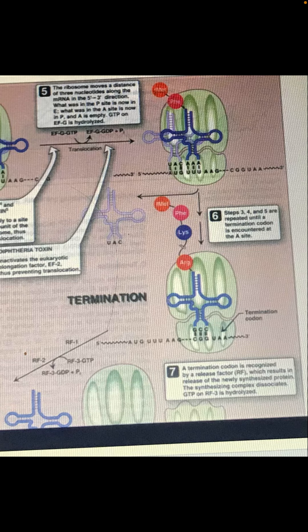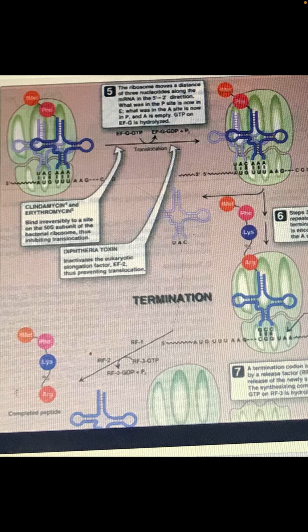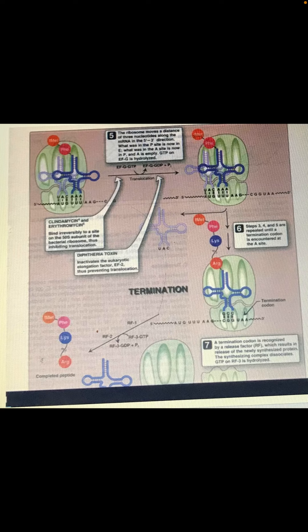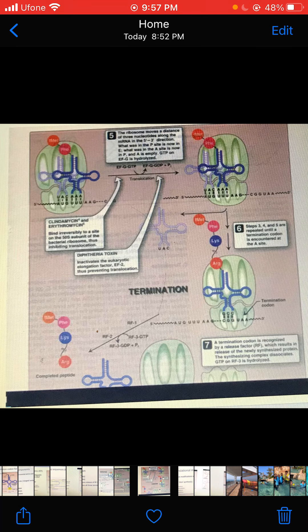Termination codons are reached and recognized by the ribosomal RNAs, causing the release of ribosomal RNA and transfer RNA from the messenger RNA. Releasing factor 3 utilizes GTP and causes the release of all the translation machinery, giving us the complete peptide sequence. This concludes today's lecture. Tomorrow we are going to review the translation process again with some post-translational modifications.